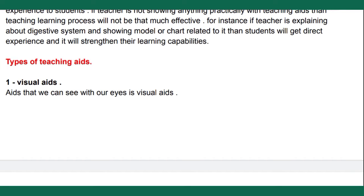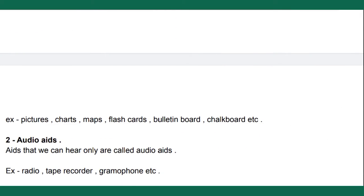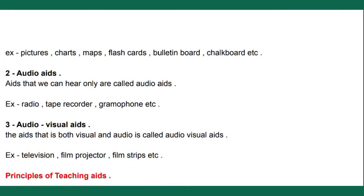Now let's see the types of teaching aids. First is visual aids, which we can see through our eyes. Examples are pictures, charts, maps, flashcards, and bulletin boards. Second is audio aids, which we can hear through our ears — examples are radio, tape recorder, and gramophone. Third is audio-visual aids, which is a mixture of both. Examples are television, film projector, and film strips, and it is much more effective than the other two.